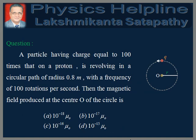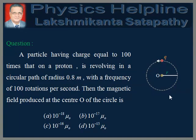Read the question carefully. The situation is shown in the figure. A particle having charge Q equal to 100 times that on a proton is revolving in a circular path of radius R equal to 0.8 meters. The frequency of rotation of the charged particle is equal to 100 rotations per second. We are required to find the magnetic field produced by this revolving charged particle at the center O of the circular path.